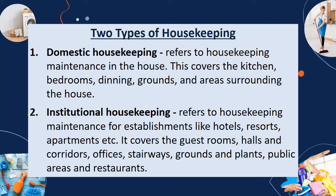The institutional housekeeping refers to the housekeeping maintenance for establishments like hotels, resorts, and apartments. It covers the guest rooms, halls and corridors, offices, stairways, grounds and plants, public areas, and restaurants.